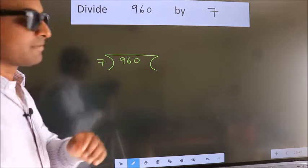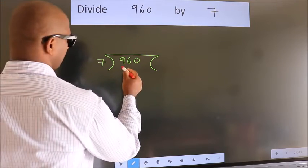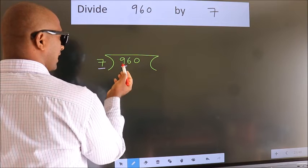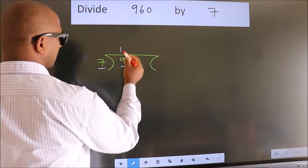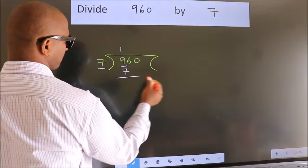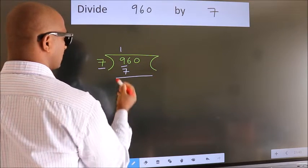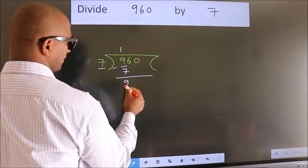Next. Here we have 9, here 7. A number close to 9 in 7 table is 7 once 7. Now, we should subtract. We get 2.